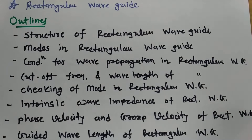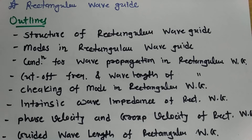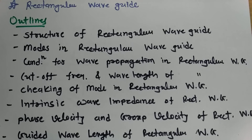In this video, I will explain rectangular waveguide with the following outline. First, I will explain the structure of rectangular waveguide. Then we will see modes in rectangular waveguide. Then I will explain conditions for propagation of a mode, cutoff wavelength and frequency, how to check propagation of modes, and basic formulas of intrinsic wave impedance, phase velocity, group velocity, and guided wavelength.